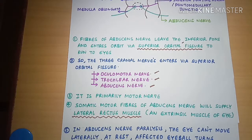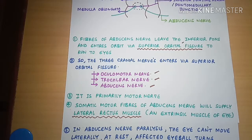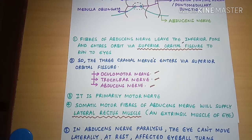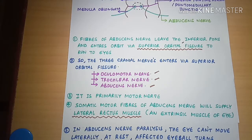We have to keep in mind that three nerves supply the eye muscles: the oculomotor nerve, the trochlear nerve, and the abducens nerve. The oculomotor nerve supplies the superior rectus, medial rectus, inferior rectus, inferior oblique, and levator palpebrae superioris. The trochlear nerve supplies the superior oblique, and the abducens nerve supplies the lateral rectus muscle.